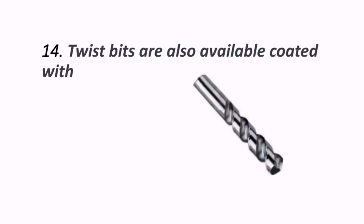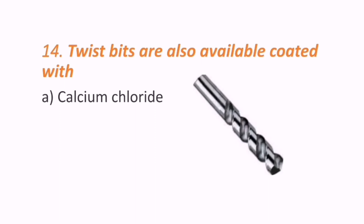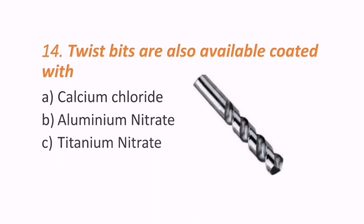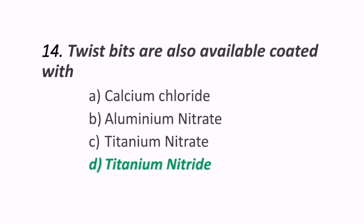Fourteenth question: twist drill bits are also available coated with what material? Options are calcium chloride, aluminum nitrate, titanium nitrate, or titanium nitride. The correct answer is D — titanium nitride is coated on twist bits.